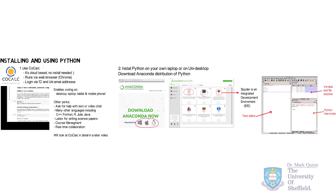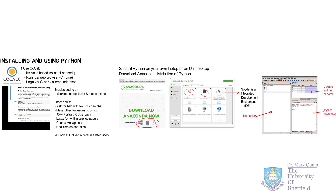So there are the two main options of how you can use Python. The online option with CoCalc is very flexible, but in the times where you don't have an internet connection, it's always worth having Anaconda installed on your laptop or desktop. In the next video, we'll look at CoCalc in much more detail.